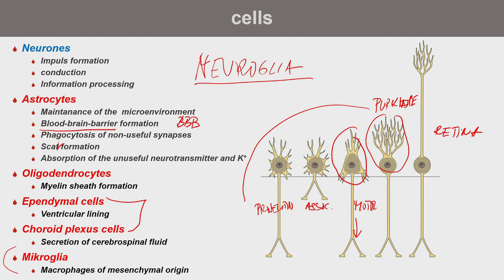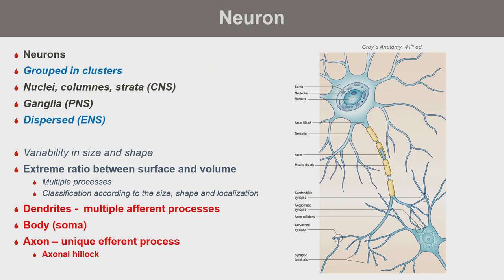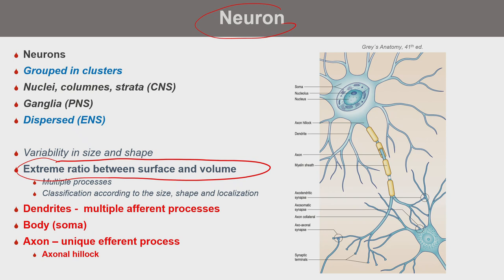All these neurons require astrocyte support to maintain function — they need oxygen, glucose, and a stable ionic environment. Neurons have an extreme surface-to-volume ratio because they are very long, with many processes and dendrite arborizations, and typically one axon that can be up to 70 centimeters long. They are equipped with synapses. In the brain, neurons are grouped into clusters called nuclei, columnae (typically in spinal cord and brain), and strata or layers in the telencephalon.